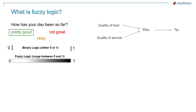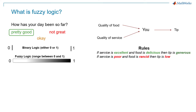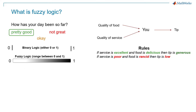Now let's consider another example where you have to tip a waiter at a restaurant based on the quality of food and the quality of service. The way you would go about figuring out the tip percentage would be based on logical rules such as: if the service was excellent and the food was delicious, then you would tip generously. Or if the service was poor and the food was rancid, then the tip percentage would be low. The decisions you make here are based on logical rules. Fuzzy systems try to solve problems in a similar way — they mimic how humans solve problems by mapping inputs to outputs using logical rules that are easily interpretable.